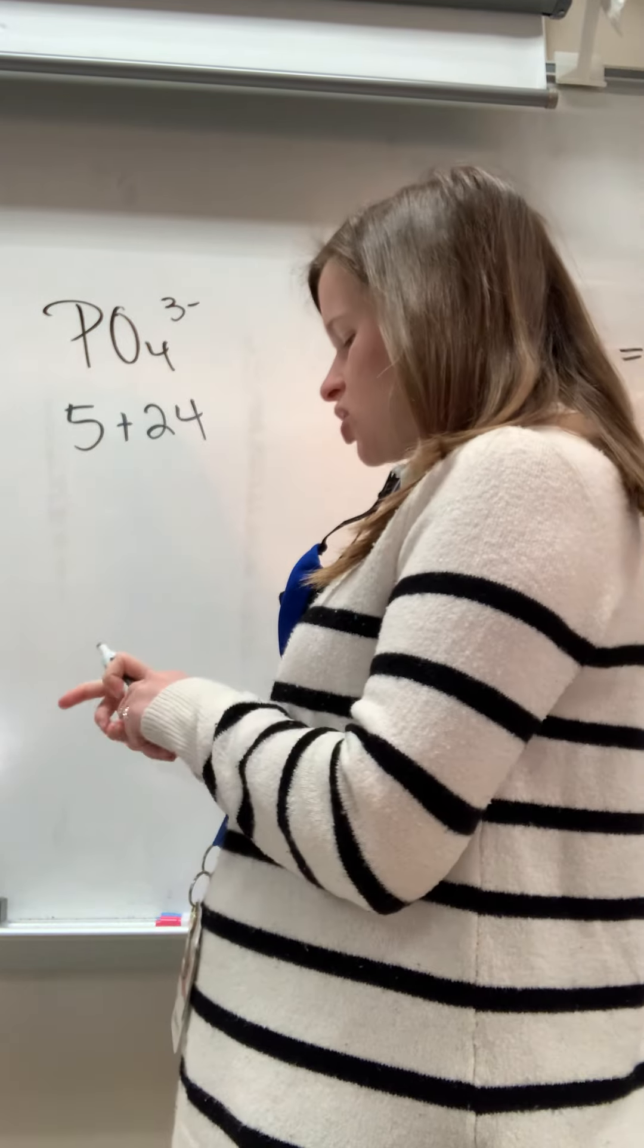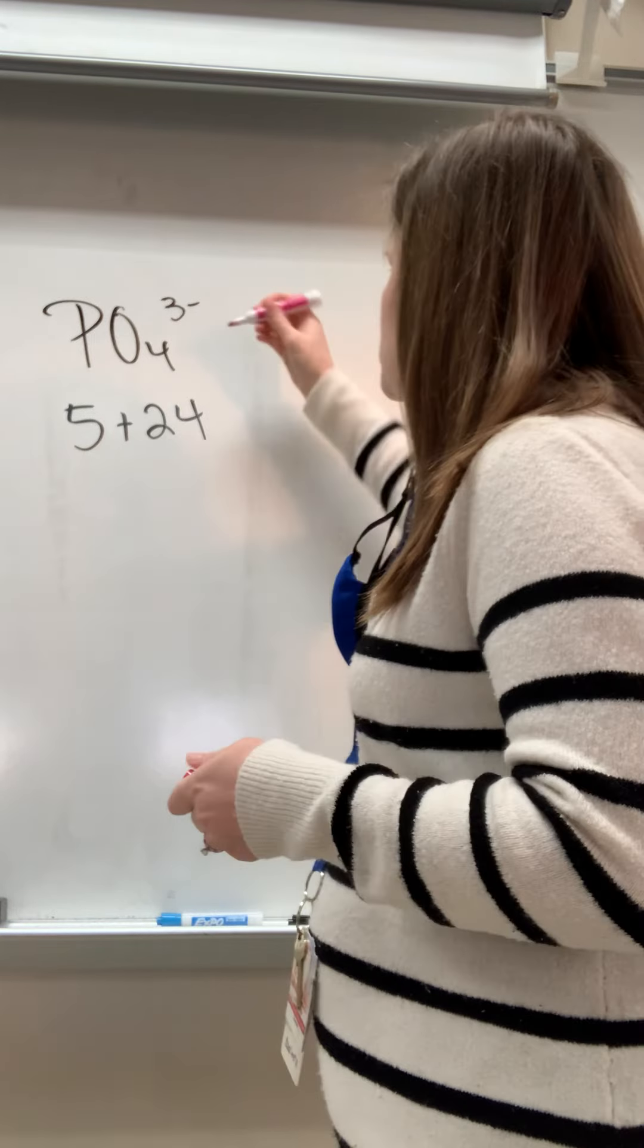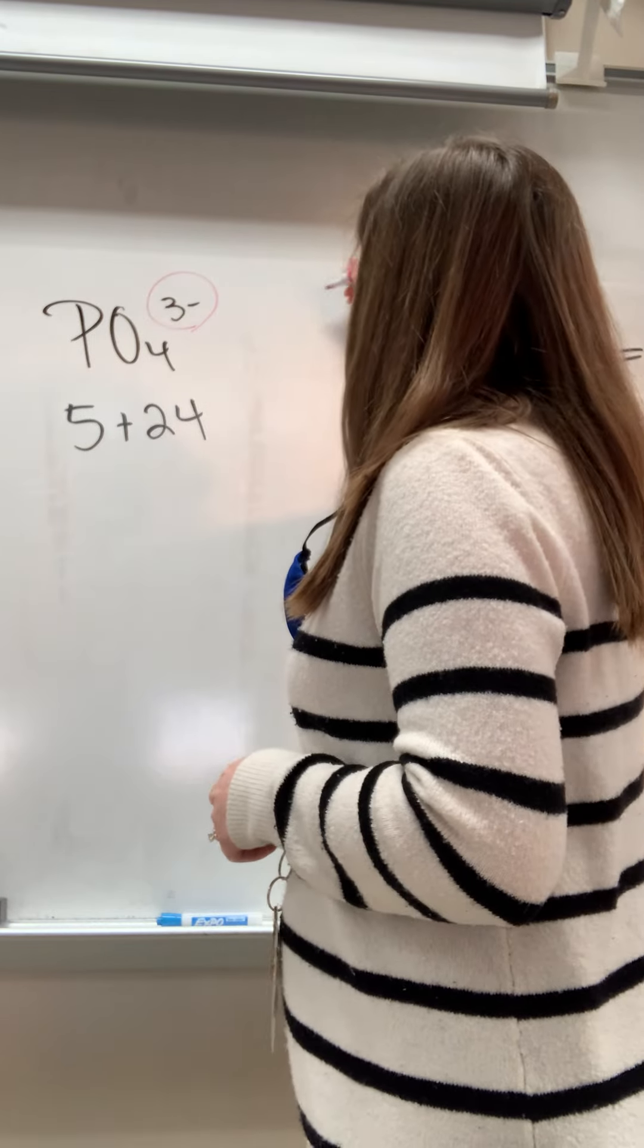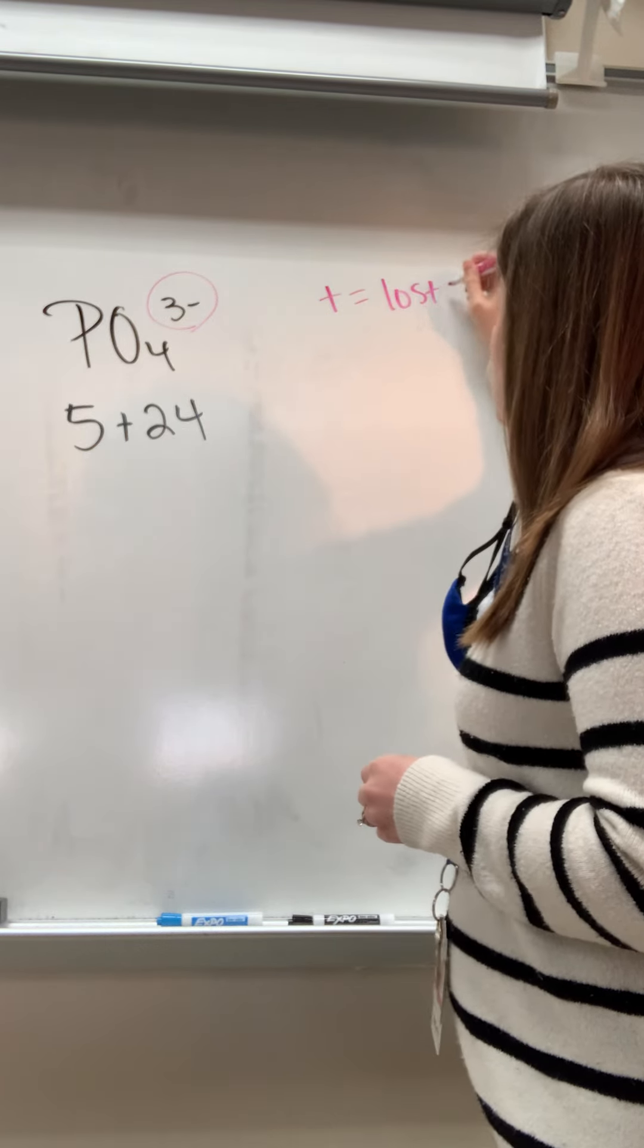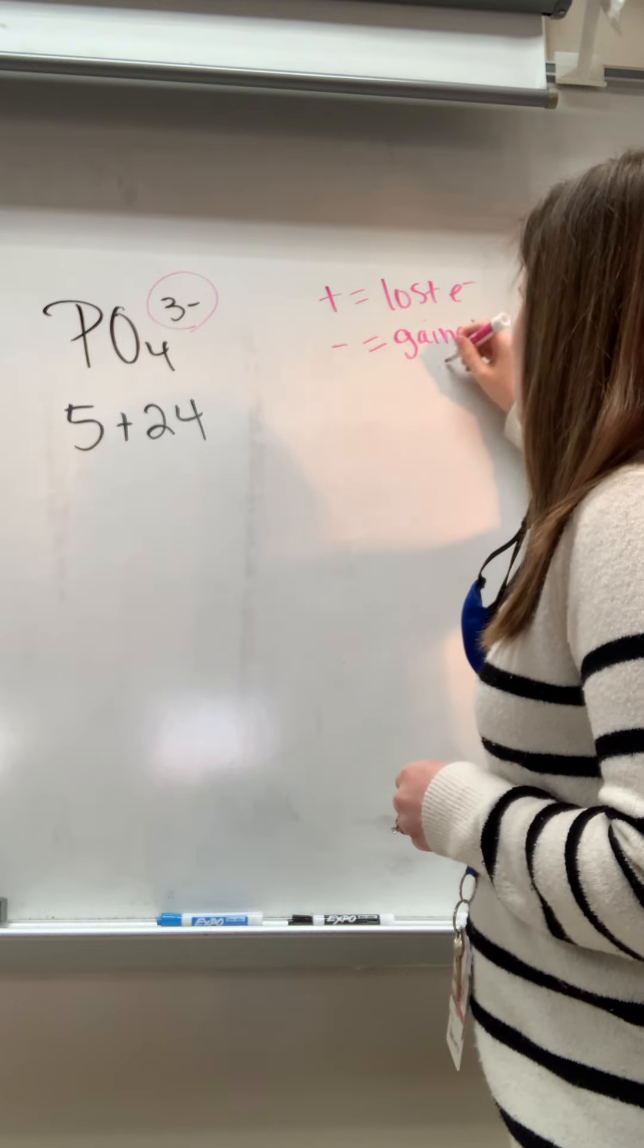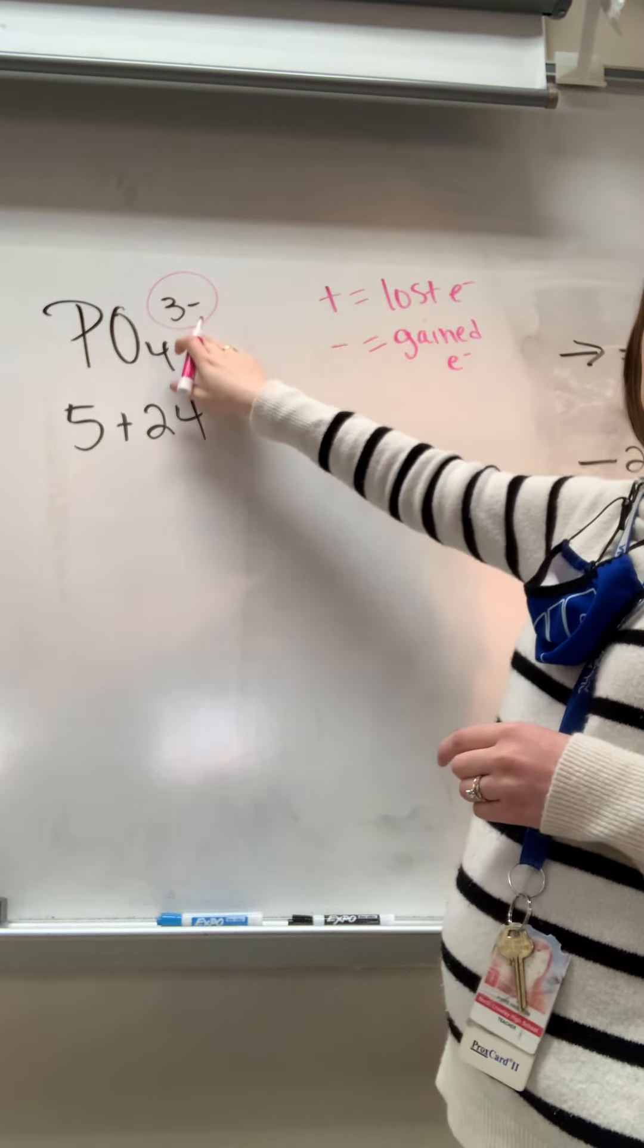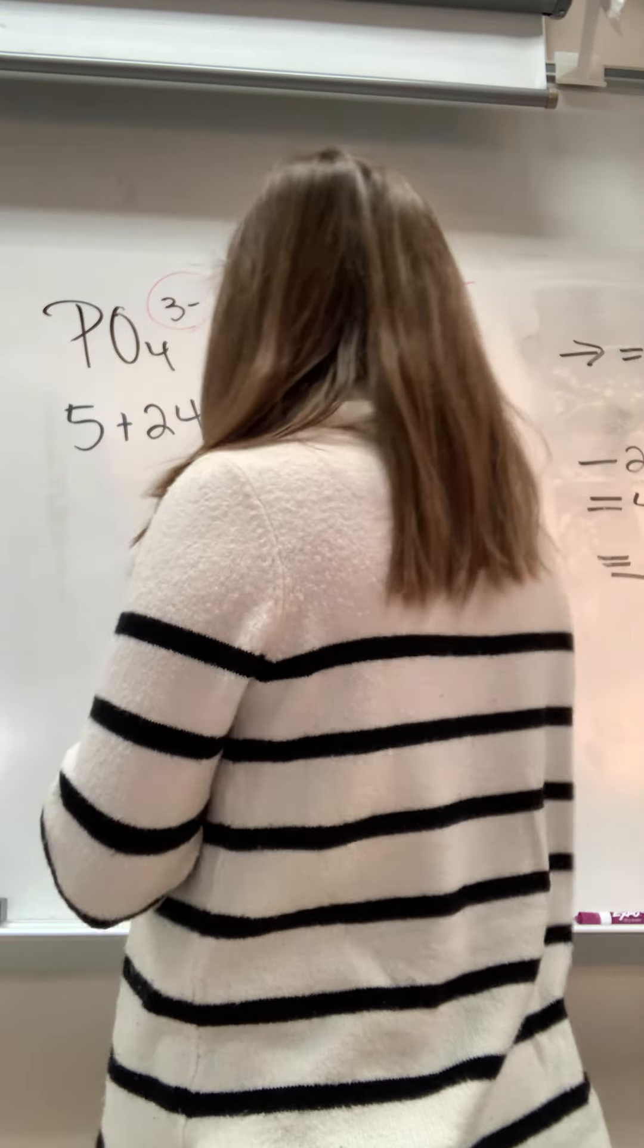And then I need to include my charge. So we only have two extra steps, and one of our extra steps is the charge. Remember, positive means that we lost electrons, and negative means we gained electrons. So we gained electrons, so whenever I'm calculating my bucket here, I need to show that we gained these electrons. So I'm going to do a plus 3 because we gained our electrons.